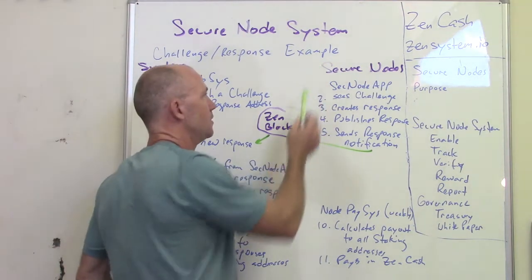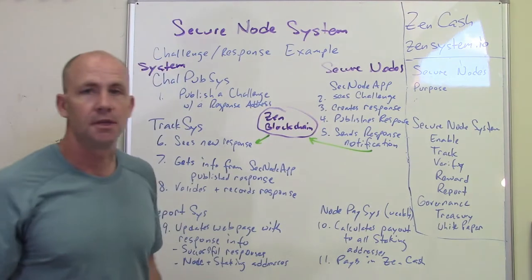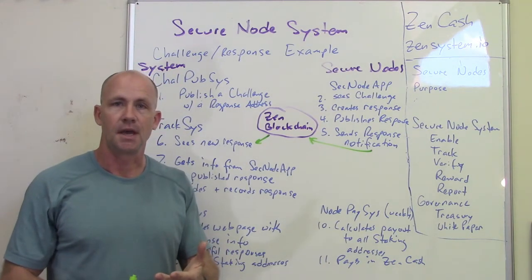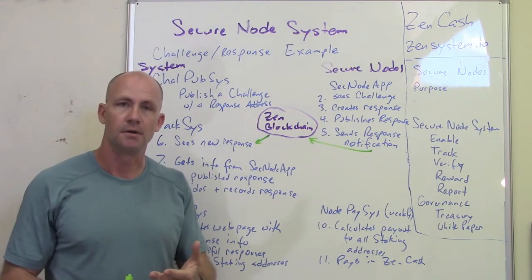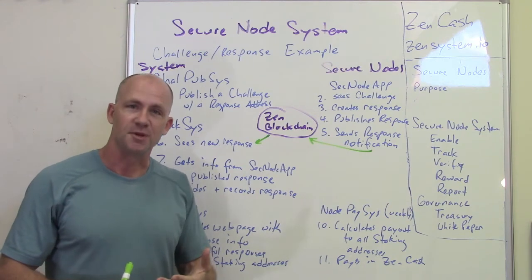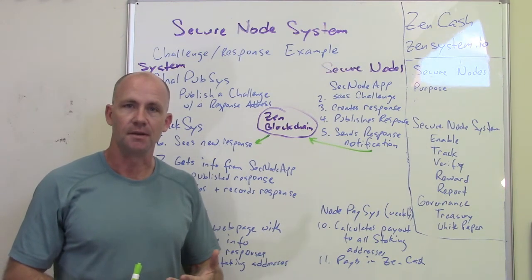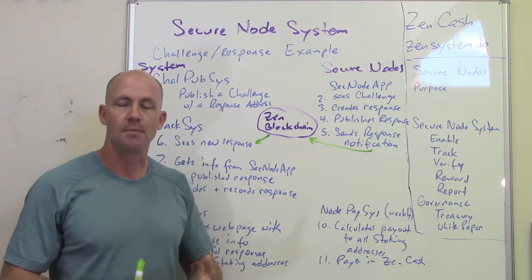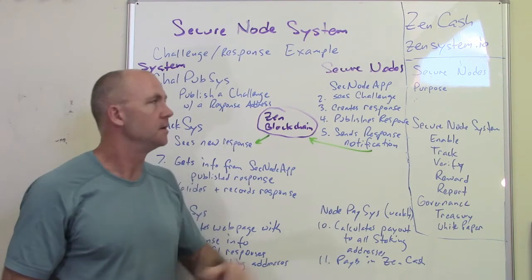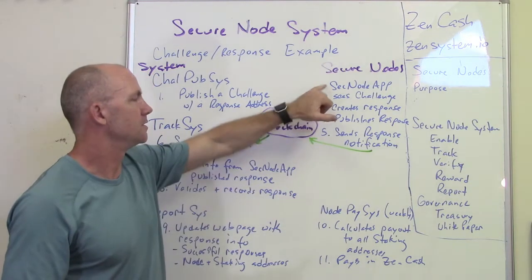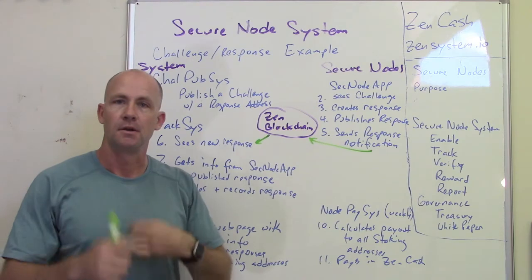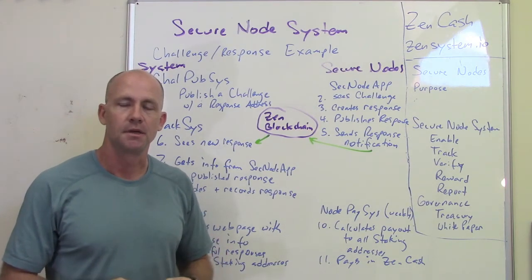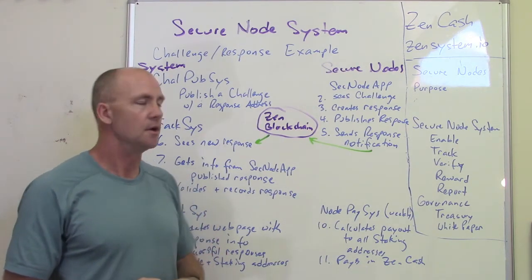Over here on a secure node — a secure node is a node running the ZenCash node software after it's been upgraded to use OpenSSL, which is in progress — and then a companion app, probably going to be written in Python, which we call the secure node app that runs alongside and on the same box as the ZenSecure node.